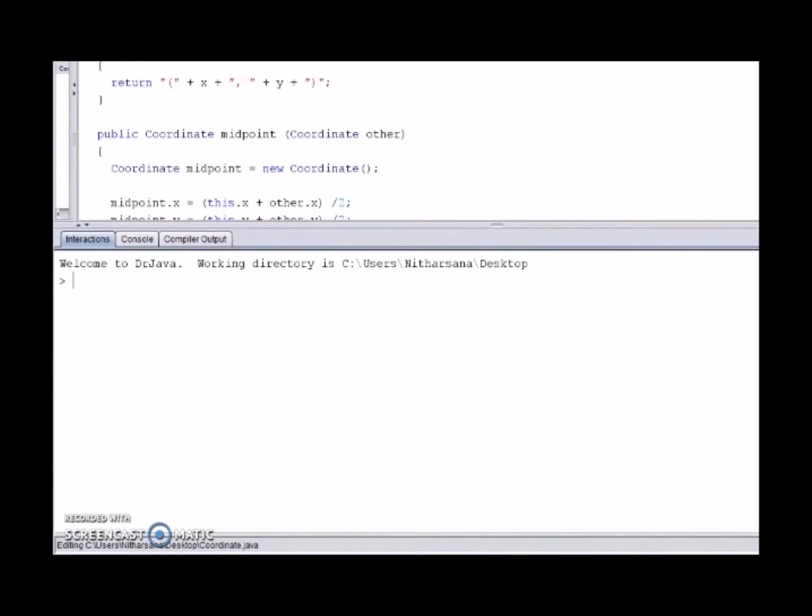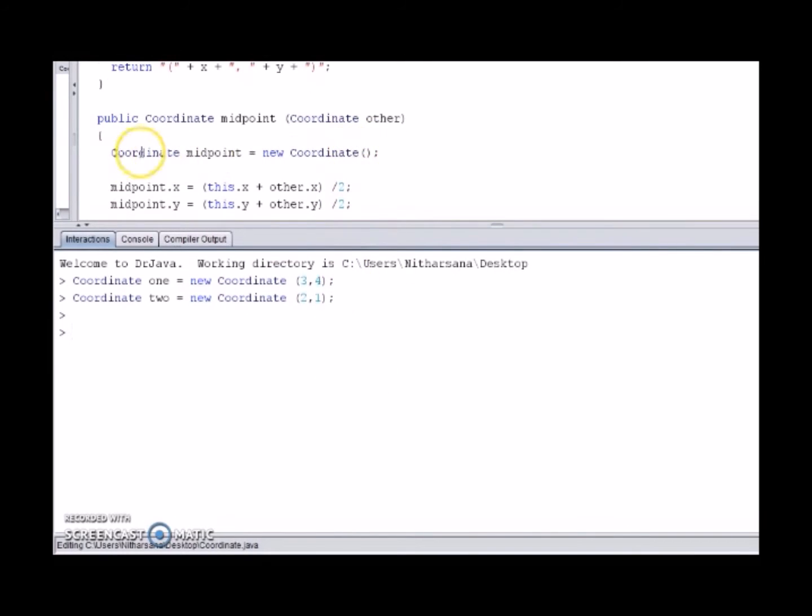In the first example for the instance method and any instance method really, we call on it by writing the implicit object dot method name bracket explicit object semicolon.